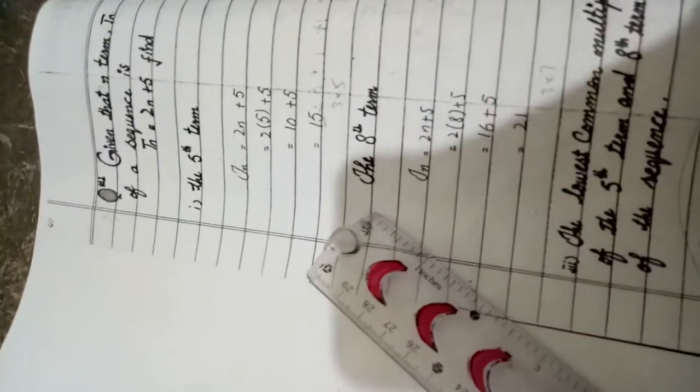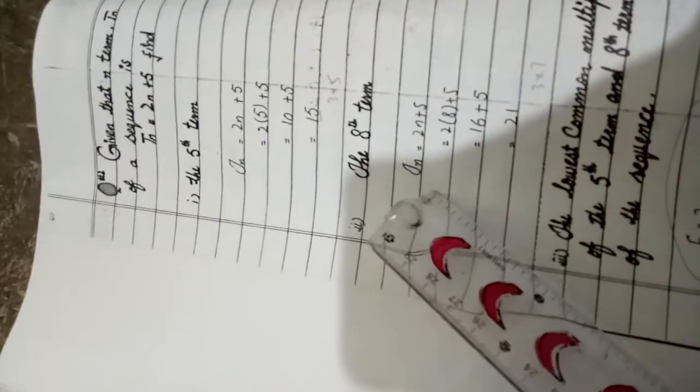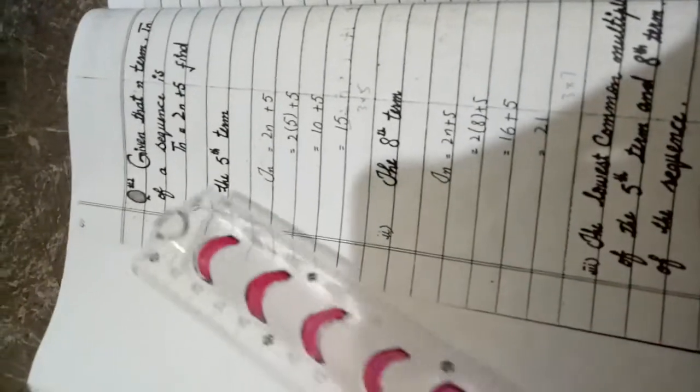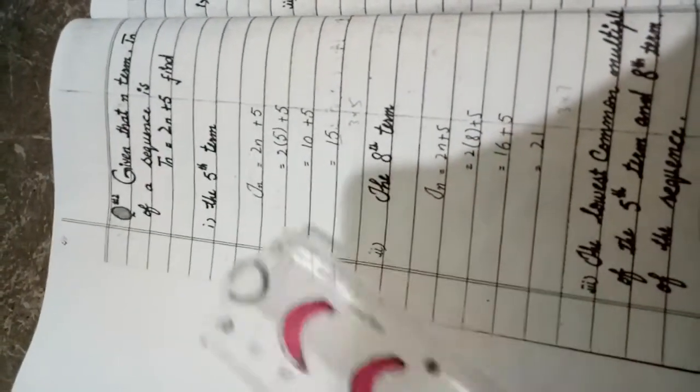For the eighth term, tn equals 2n plus 5. We put n equals 8: 2 times 8 plus 5. Two times 8 is 16, plus 5 equals 21. The eighth term is 21.